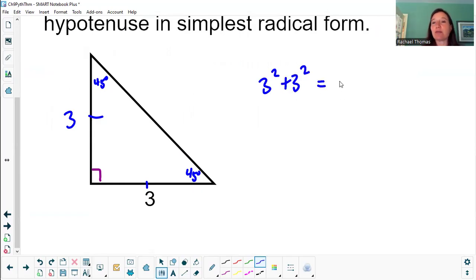Now I can just use the Pythagorean theorem. 3 squared plus 3 squared, that would be 9 plus 9, is 18. So the hypotenuse is going to have a length of the square root of 18.